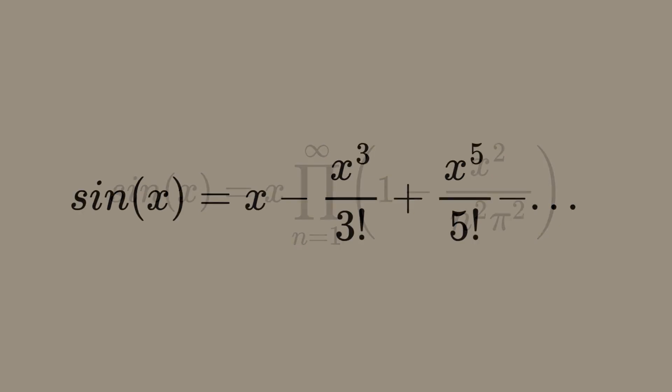Euler then expanded sin(x) as a power series: sin(x) = x - x³/3! + x⁵/5! - x⁷/7! and so on.